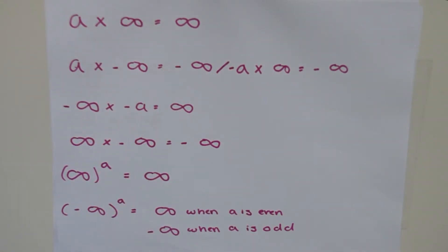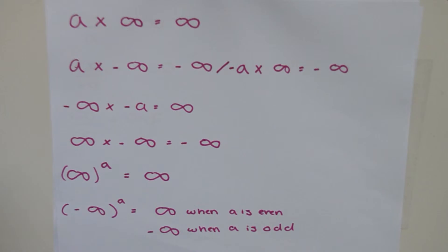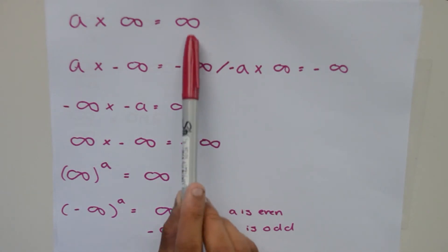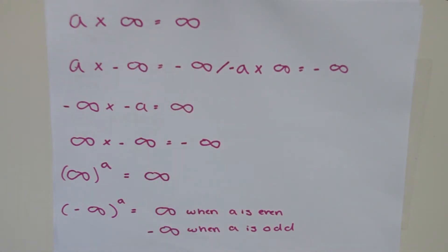Moving on: a positive infinity multiplied by a positive finite number equals positive infinity. This makes sense because multiplying a really really large positive number by a positive number makes that number even larger. We can again characterize this large number as infinity. So a finite positive number times positive infinity equals positive infinity — though the resulting infinity is larger in a sense.